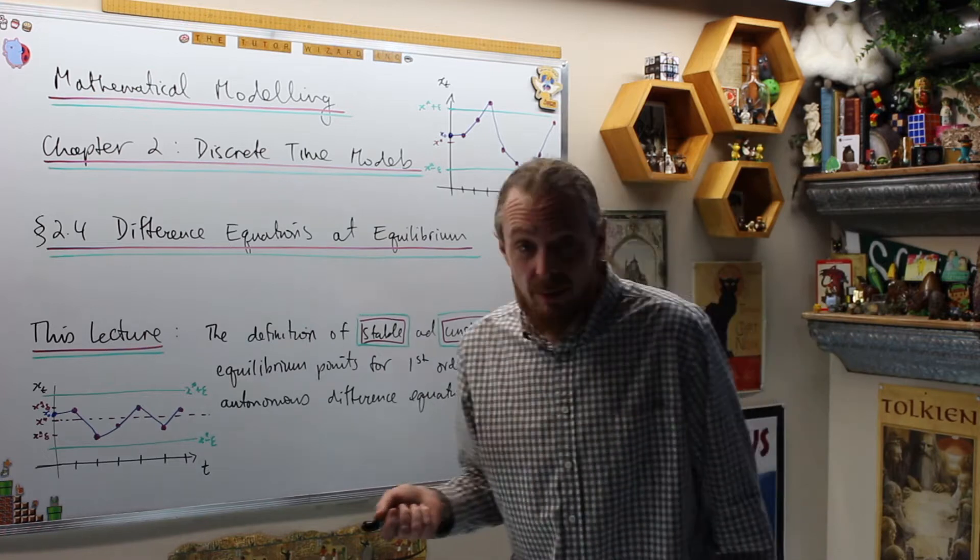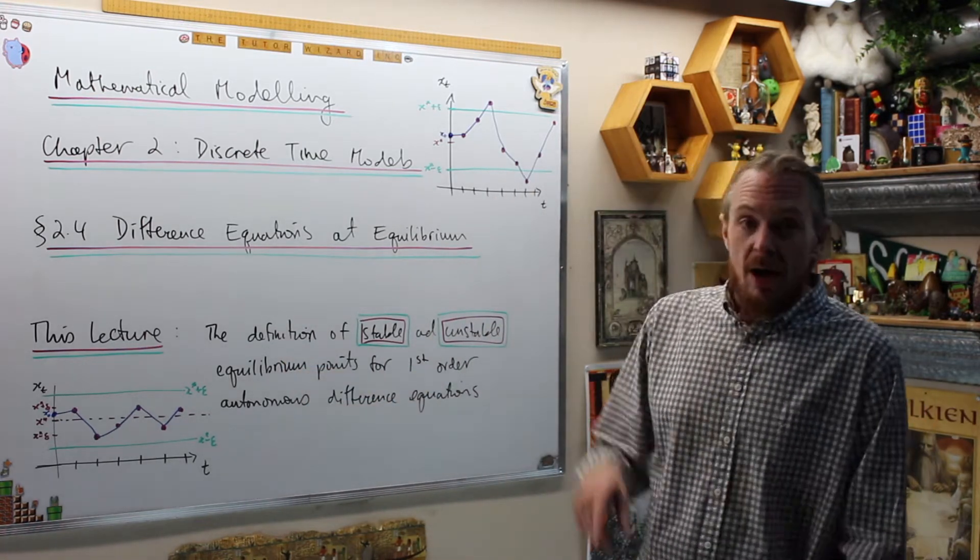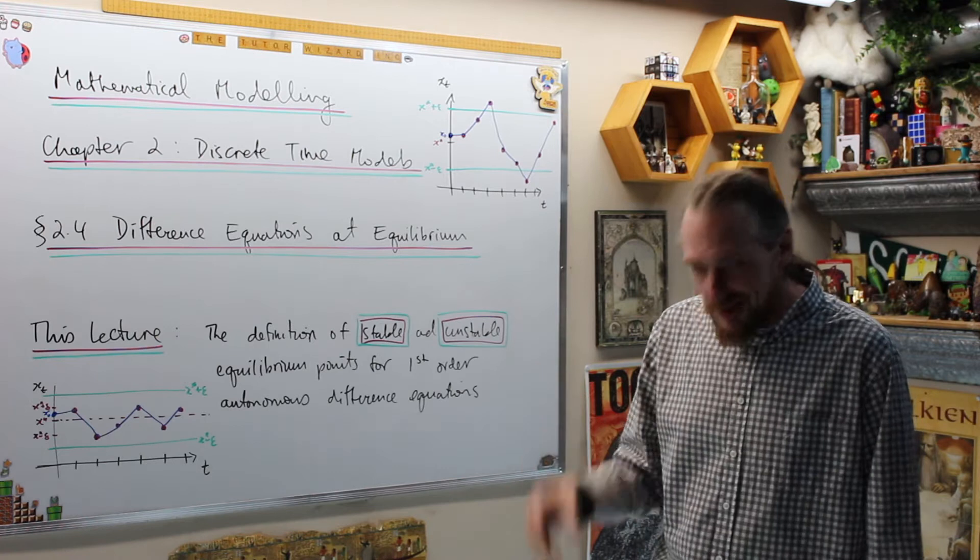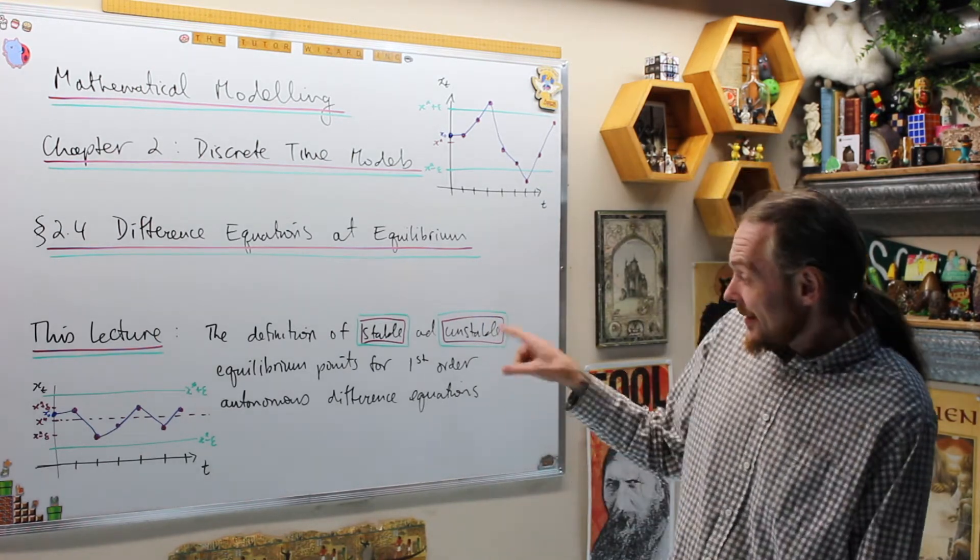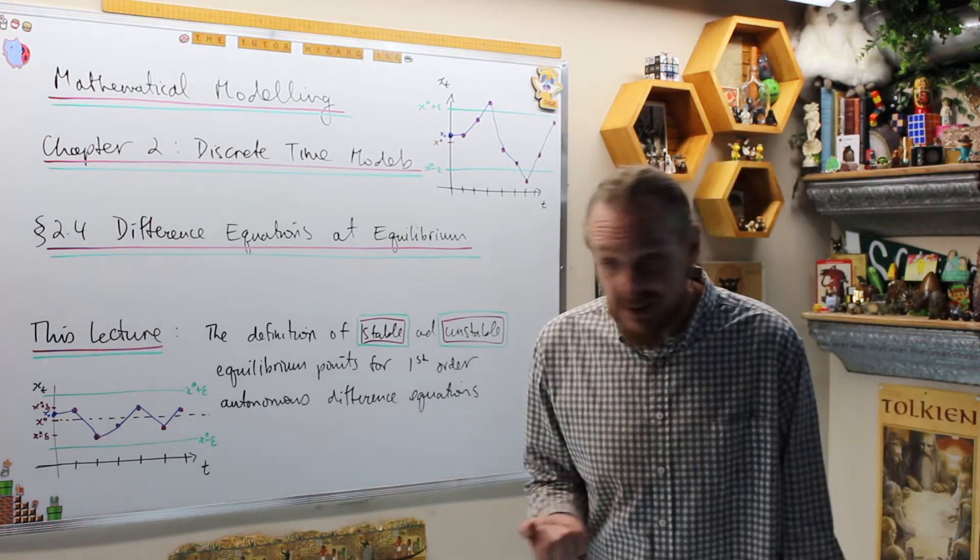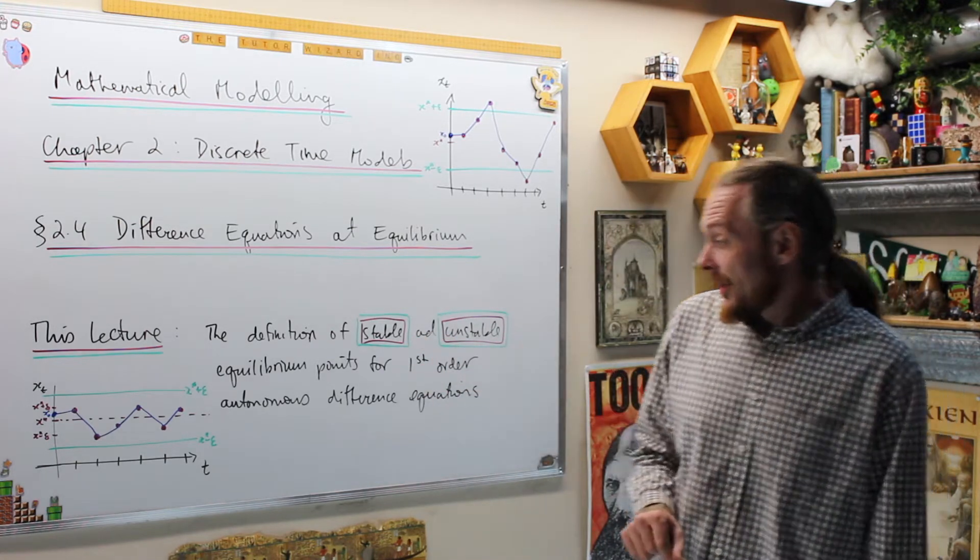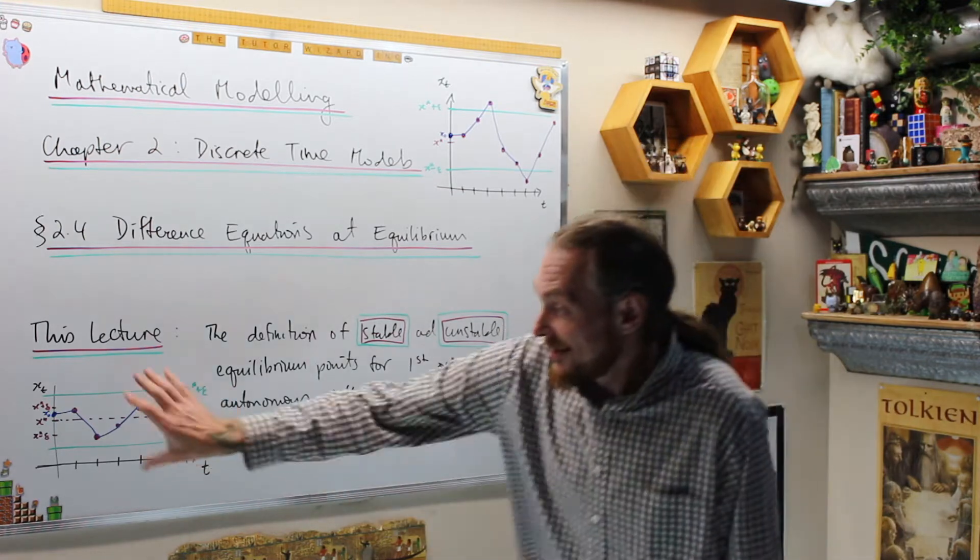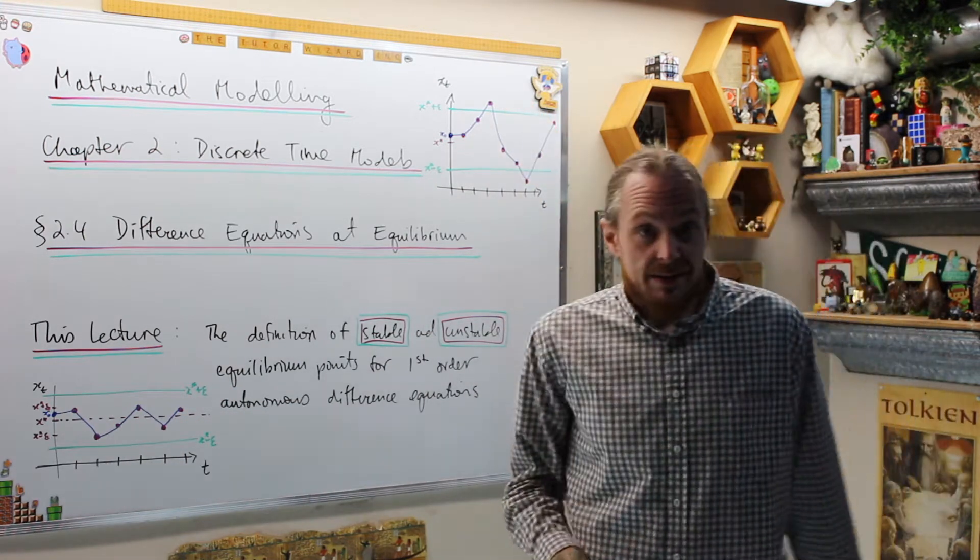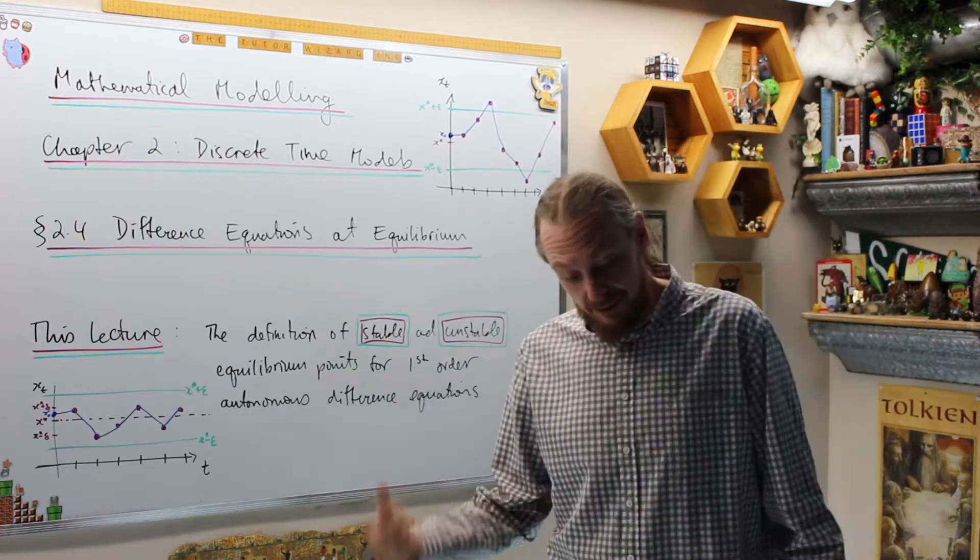And this lecture, what we're going to do is—last lecture we looked at cobweb diagrams and the intuitive idea of what equilibriums are and the stability of equilibriums. This time, what we're going to do is give the rigorous mathematical definition of stable and unstable equilibrium points for first-order autonomous difference equations. Let's get to it.